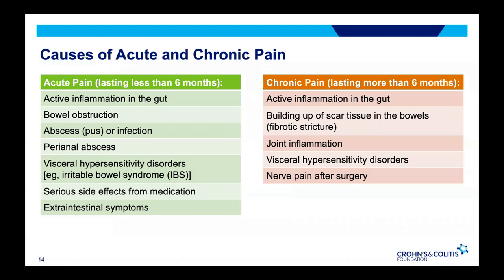Chronic sources of pain — lasting more than six months — can be derived from persistent active inflammation in the gut, a buildup of scar tissue in the bowel leading to strictures and other complications, inflammation in your joints, visceral hypersensitivity disorders, and nerve pain after surgery such as the nerve entrapment mentioned previously.